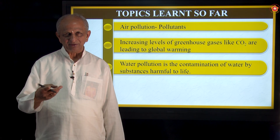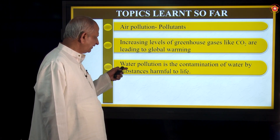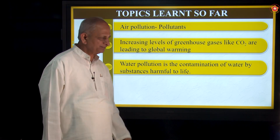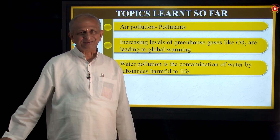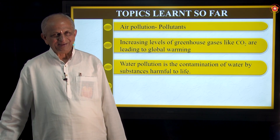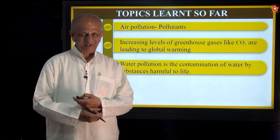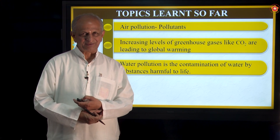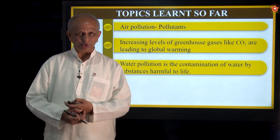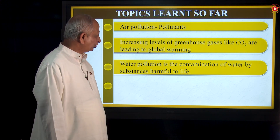Air and water are one of the pancha bhutas, which are very essential for all living beings. Pollution of water takes place by contamination of water by substances. What are the substances that pollute water? Sewage water, toxic chemicals given out by factories, washing of vessels, washing of animals, and throwing of all unwanted materials — all these pollute the water.